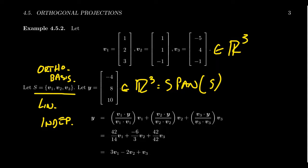There's some linear combination of V1, V2, V3 that will produce this vector Y right here. What are the coefficients? Well, we could do this. We could calculate this by looking at the matrix 1, 2, 3, 1, 1, negative 1, negative 5, 4, negative 1.